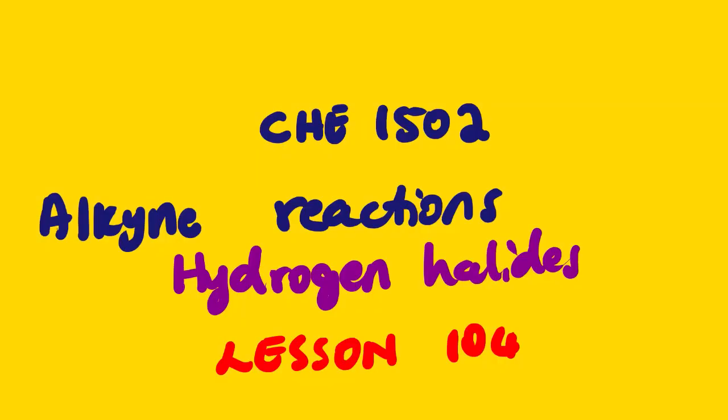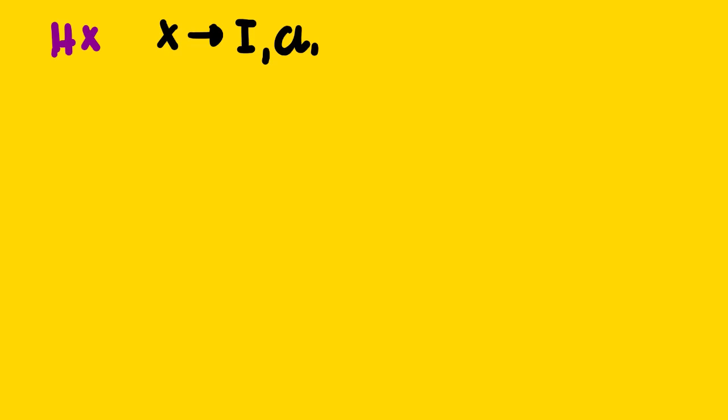Our lesson for today will be looking at Chemistry 1502. The topic for today is alkyne reactions — we'll be looking at hydrogen halides, lesson 104. We are going to take an alkyne and add it with hydrogen halide. Hydrogen halide is represented as HX, where H is hydrogen and X can be any halogen, but the most common ones are iodine, chlorine, and bromine.